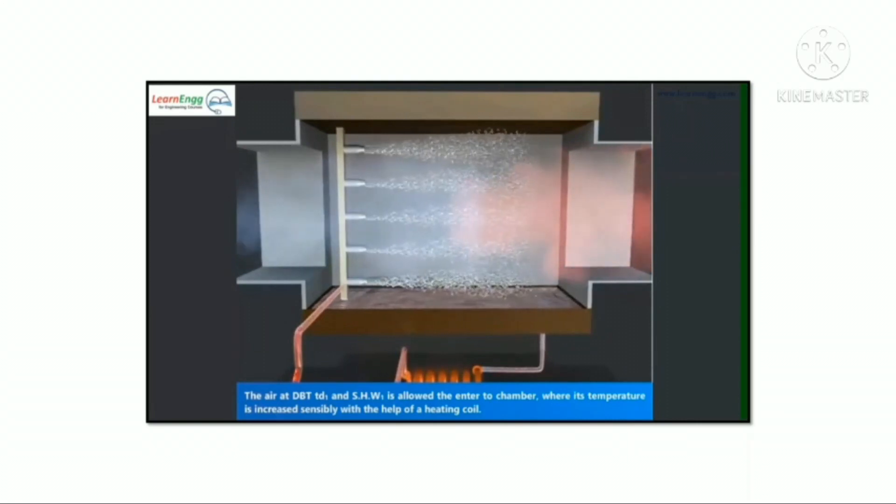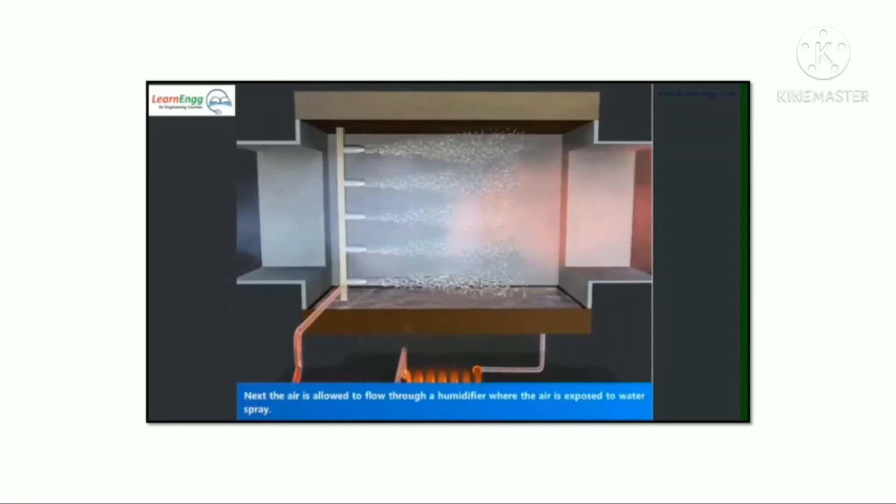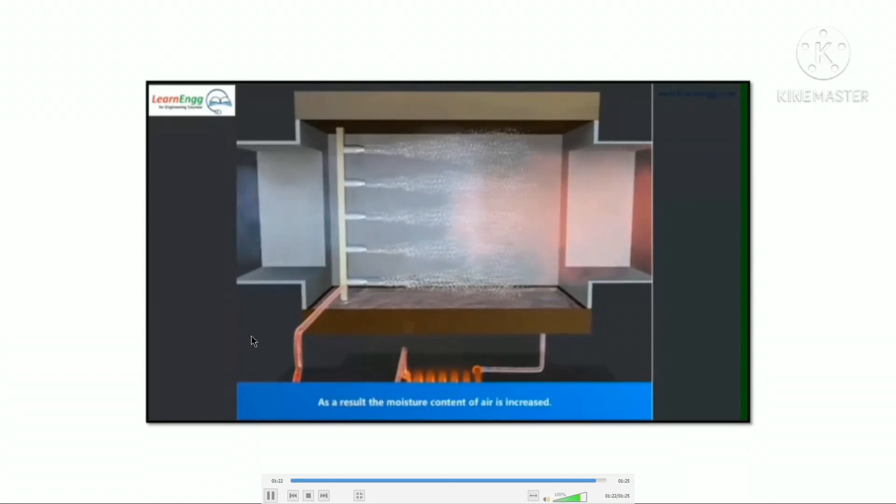Then, the air is heated by using a heating coil to increase the temperature of the air according to the desired temperature. This process will increase the dry bulb temperature. Now, the air is warmer and more humid. The result of this process is the house is more comfortable to live in.